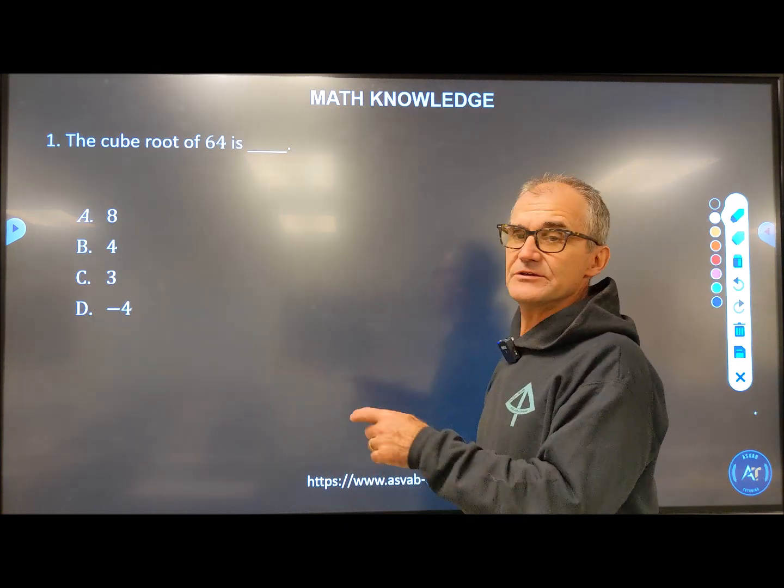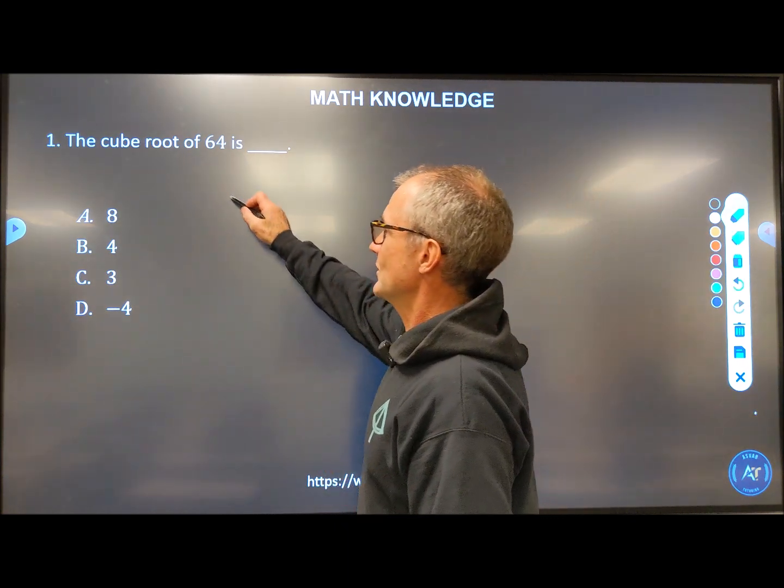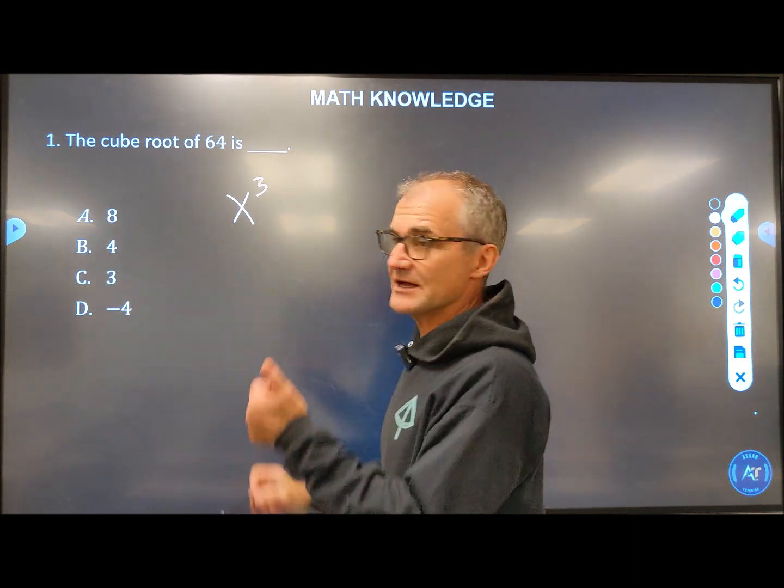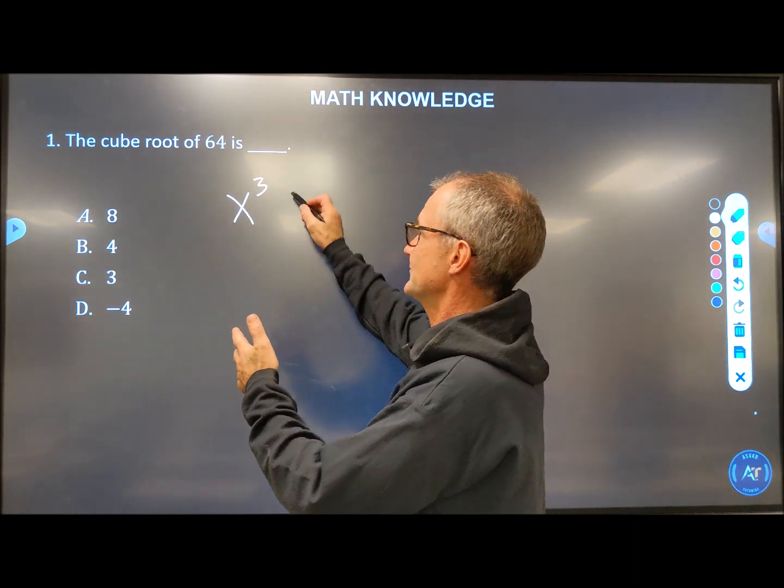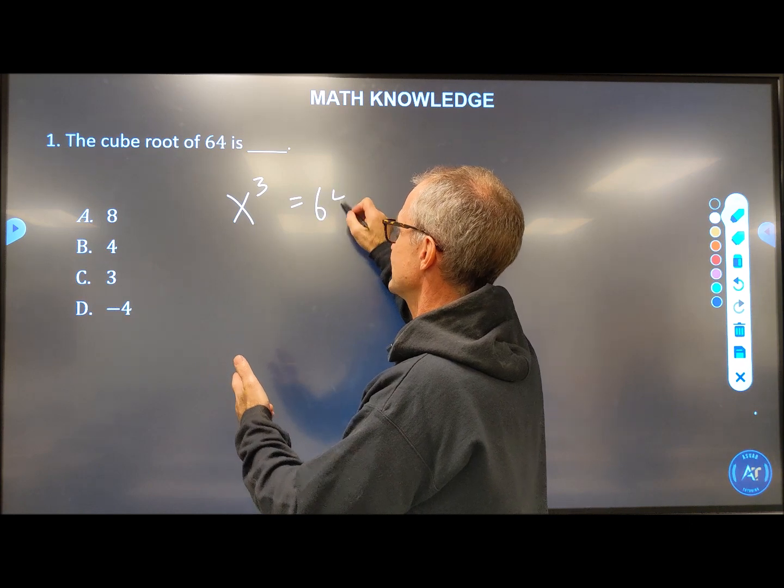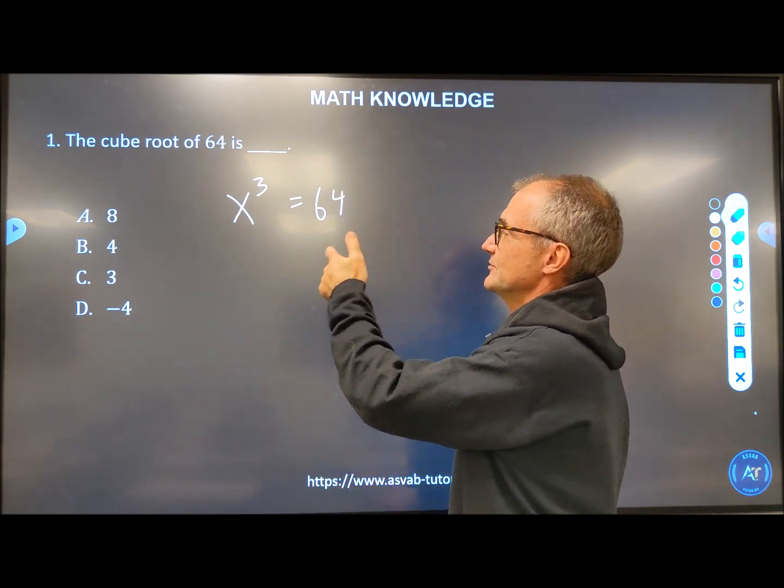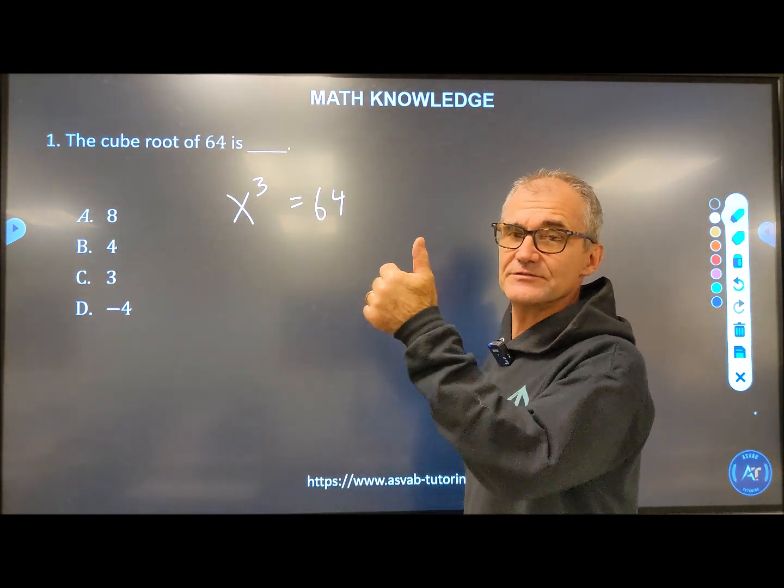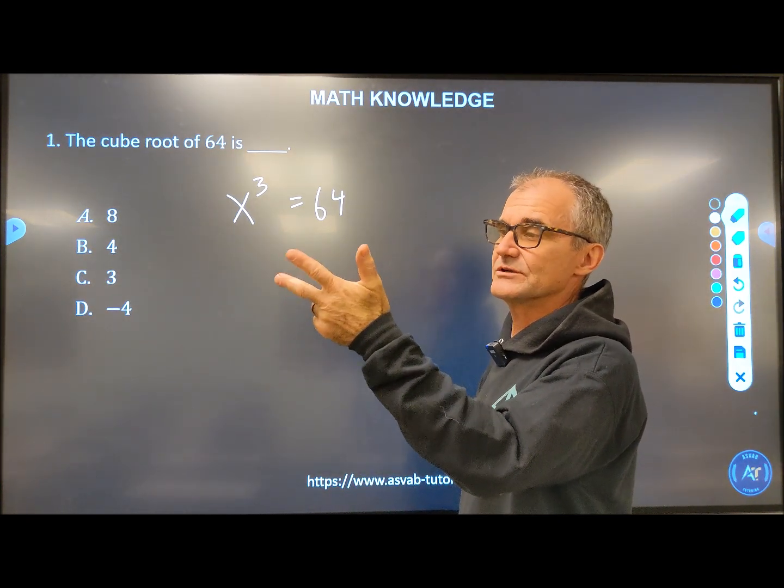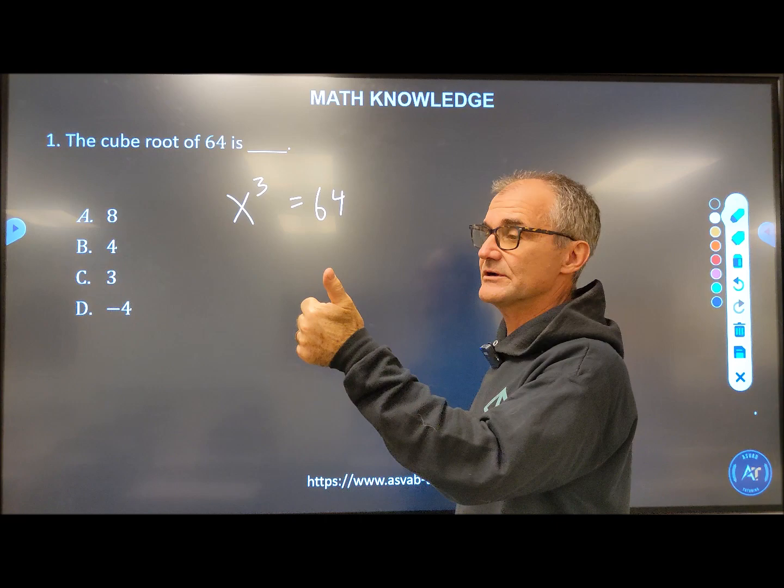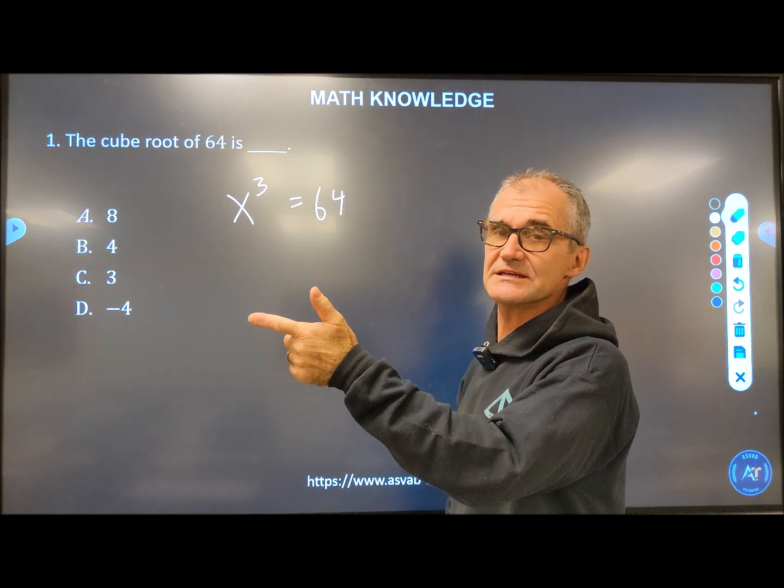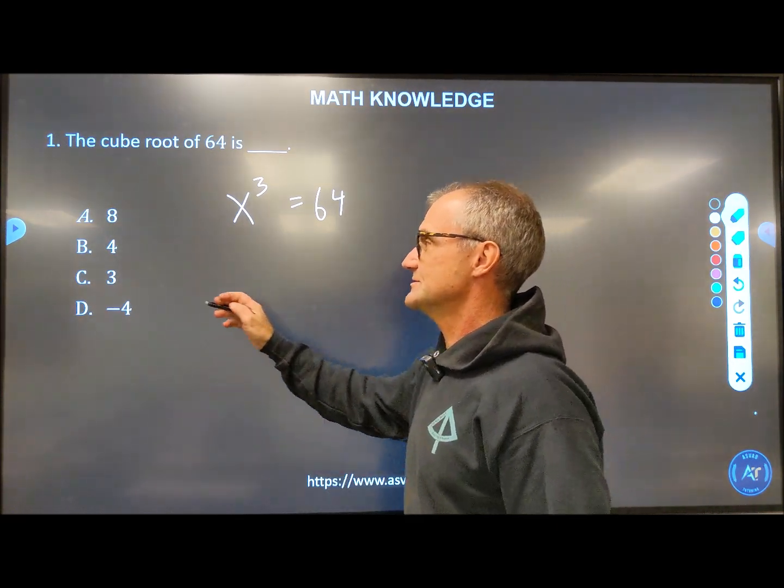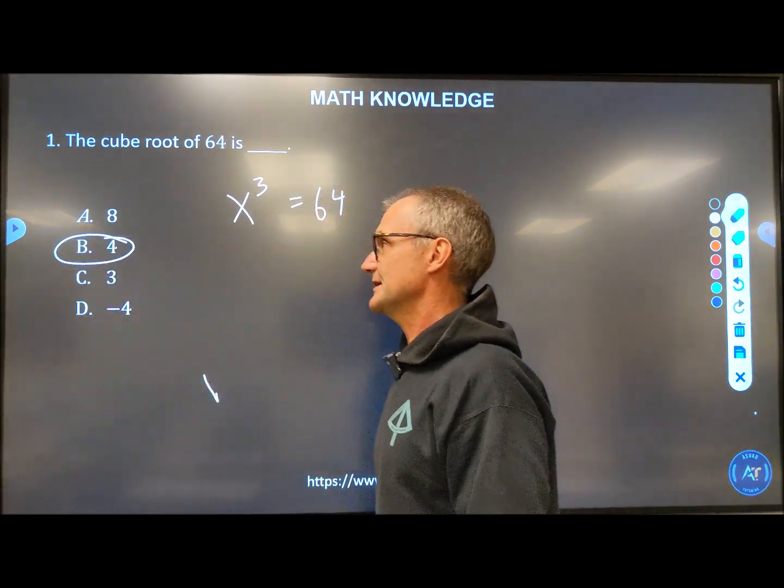Number one, the cube root is saying what times itself times itself is equal to 64. So what you're saying is what number to the third power is equal to 64. And this is kind of a trial and error. If you did five, you go five, 25, 125, too big. Four, four times four, 16, 16 times four, 64. So I could see four is my answer.